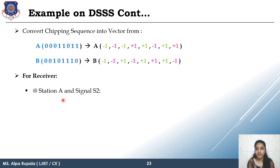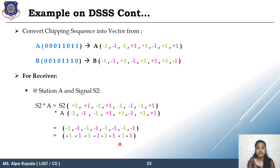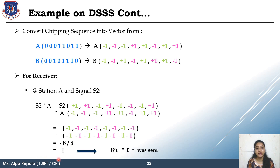Again at the receiver side, for station A and signal S2, the formula is S2 multiplied by A. S2 is sent to the receiver and A is the original chipping sequence. Multiplying all elements and integrating gives minus 8, and dividing by 8 gives minus 1. Minus 1 represents bit 0, so the receiver can identify that the bit which was sent was 0.